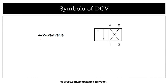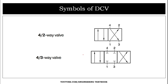Our next symbol is the four by two DCV. Here there are two positions and four ports: one, two, three, and four. Port one represents the pressure port, port three represents the exhaust port, and ports two and four represent the work ports. The next valve is the four by three way valve, which has three positions and four ports, similar to the four by two valve.